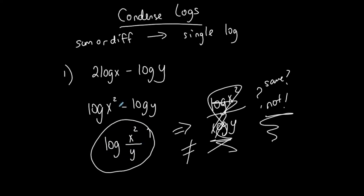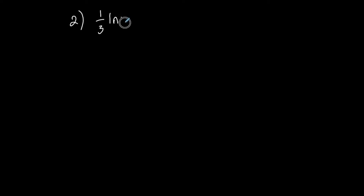If I have a difference of two separate logs and I want to condense it into a single log, I should only write 'log' once, and the difference becomes a quotient after the log — it doesn't become a quotient of separate logs. Don't make that error. Now let's do: one third times the natural log of x, plus one half times the natural log of y, minus two times the natural log of z.